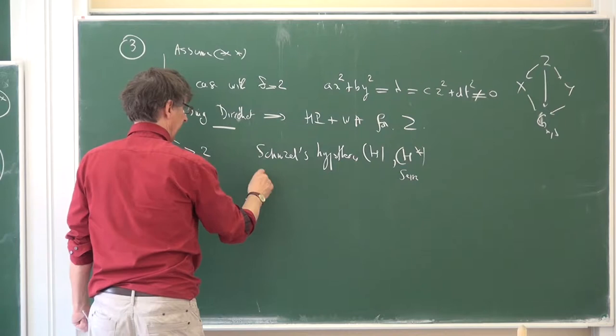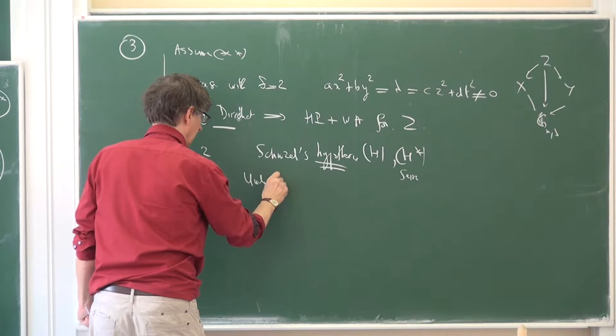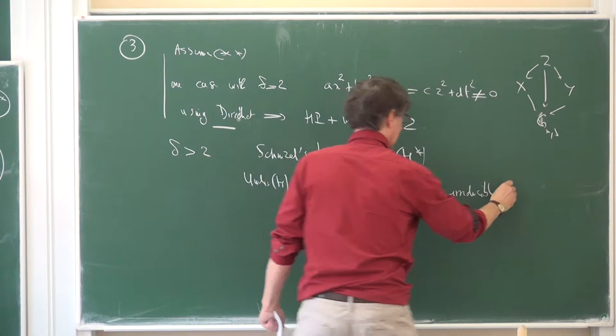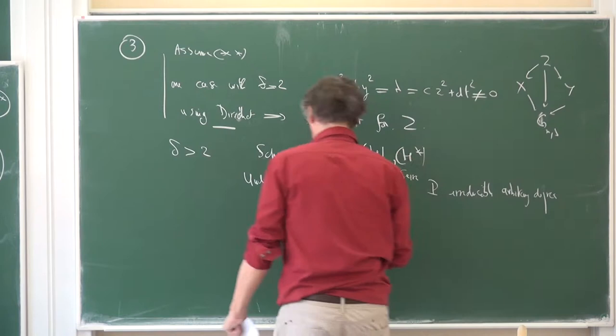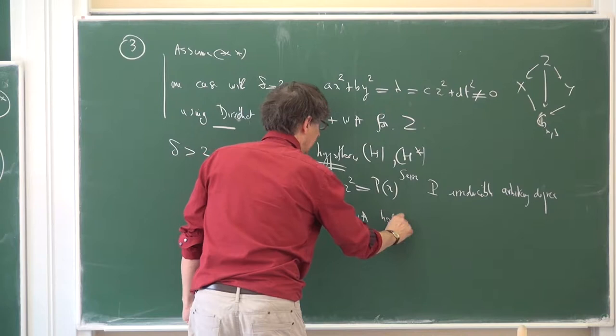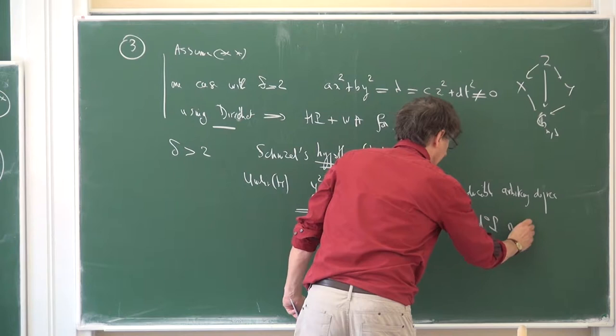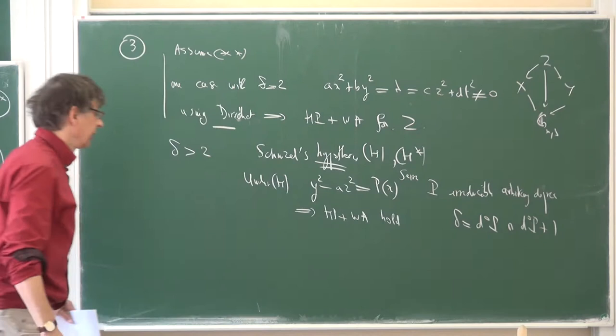Under hypothesis H — which is a conjecture — if we look at the equation y² - x² = p(x) where p is irreducible of arbitrary degree, then the Hasse principle plus weak approximation holds for any smooth projective model of this surface. In that case delta equals the degree of p or degree of p plus one, depending on whether the degree is odd or even.